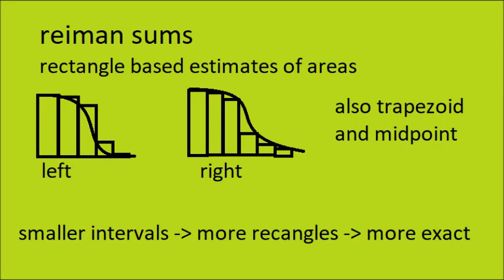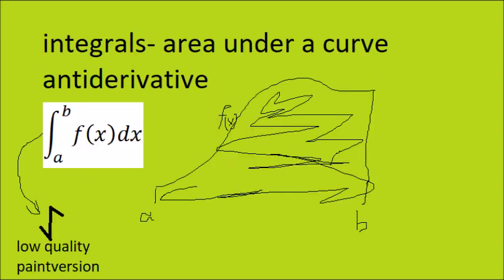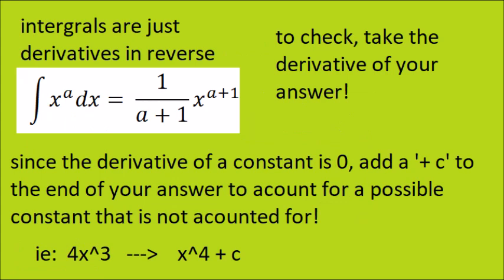Riemann sums are rectangle estimates, left, right, mid, and trapezoid. It just depends on how you're finding the area. More rectangles is more precise. Integrals are the area under the curve, and it's basically just the derivative backwards. You just gotta remember to put the c, and that's about it.